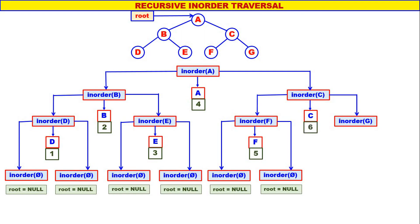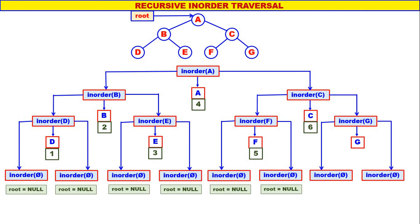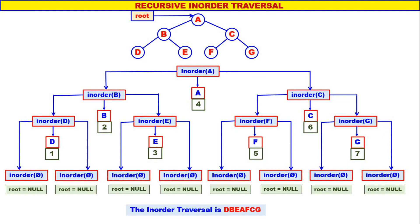Inorder of null — when root is equal to null, nothing happens. So inorder of F is over. Next C will be the sixth one to be displayed. Next we come to inorder of G. Left child of G is null, therefore inorder of null. G is displayed. Right child of G is null, therefore inorder of null — nothing happens. G will be the seventh one to be displayed. So the recursion tree is over. The inorder traversal is D, B, E, A, F, C, G. The recursive inorder is quite simple and straightforward.